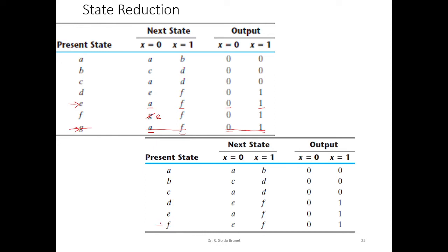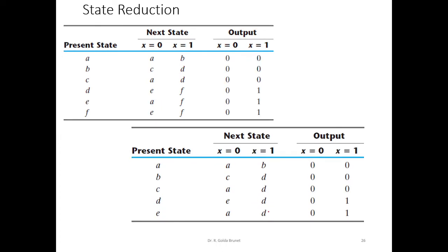We can find that D and F are one and the same. For input 0 they transit to E and output 0, and for input 1 they transit to D and output 1. So we can keep any one of these — we will keep D and remove F, and wherever F occurs we will replace it with D. So these occurrences will be replaced with D. This is our reduced state table.